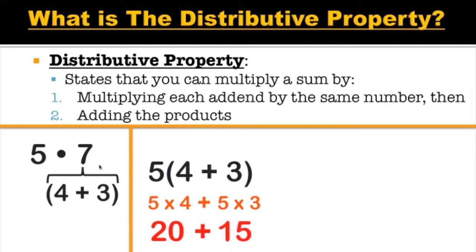We'll bring down our plus signs. Then we'll distribute five to the next number, which is three — this gives us five times three, and five times three is fifteen. Now we're on step two: we just add the products. So we add twenty plus fifteen, and that gives us thirty-five.